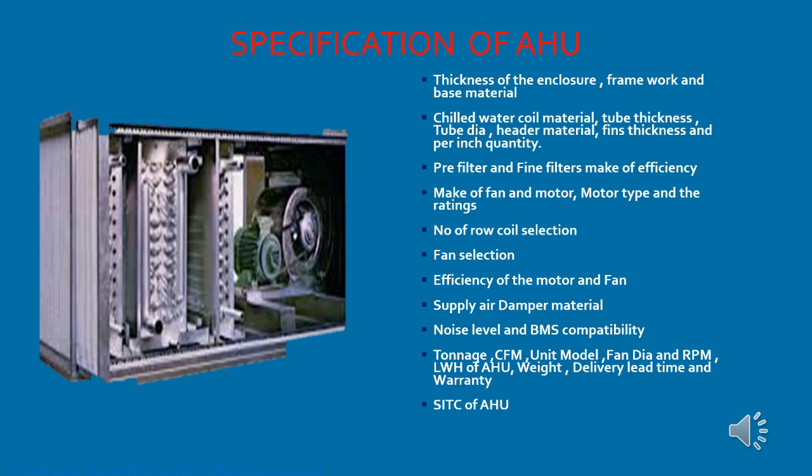Let us see what specifications we need to check for an AHU. First: thickness of the enclosure, framework and base material. Next: chilled water coil material, tube thickness, tube diameter, header material, fin thickness, and fins per inch quantity. Also check pre-filter and fine filter make and efficiency, fan and motor make, motor type and ratings, number of rows in coil selection, fan selection, and efficiency of motor and fan.